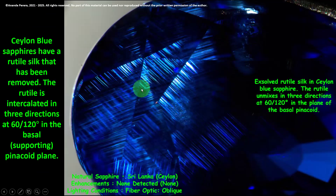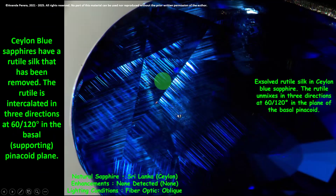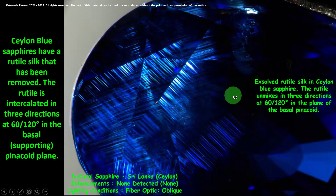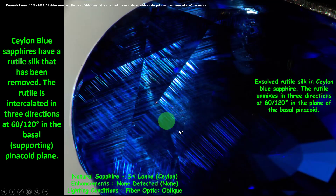Another common feature: as I explained in lesson number two, the star is created by rutile silks at 60 and 120 degree angles. Parallel rutile silks are there. These are exsolved rutile silks in blue sapphire. The lighting condition is fiber optic oblique, and you can see the rutile silks inside the stone — also a common thing inside Sri Lankan sapphires.